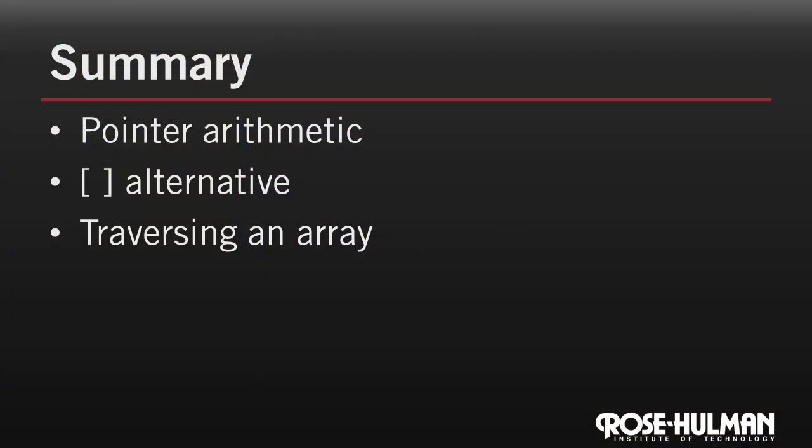Let's summarize. First, pointer arithmetic allows us to easily write expressions for the addresses of elements in an array, based on the address of the first element. Second, we used pointer arithmetic and then dereferencing to write alternatives to subscripts for accessing array elements. Remember, just in case the bracket keys on our keyboard broke.